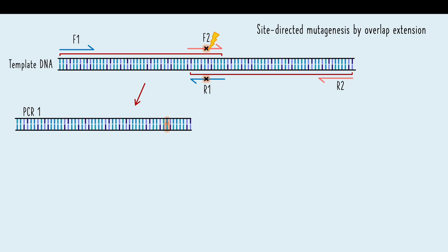The first PCR reaction will amplify the upstream fragment incorporating the mutation at its 3' end. The second PCR reaction amplifies the downstream fragment incorporating the mutation at its 5' end. Both fragments will overlap at the site of mutation.